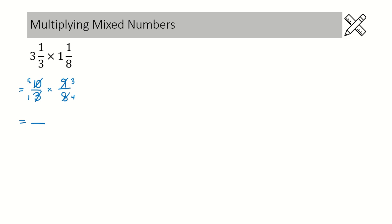Now there are no common factors. We can multiply straight across. We get 15 in the numerator and 4 in the denominator. What do you notice about this fraction? It's improper.